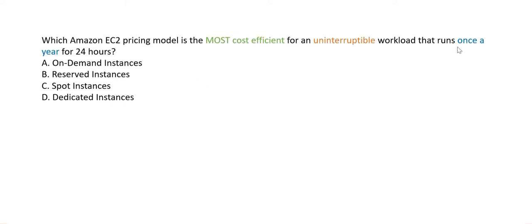However, reserved instances can be locked in for three years, making them unsuitable for a workload that runs only once a year. On-demand instances would suffice because the frequency of workload execution is too low. Spot instances cannot provide uninterruptible workloads, and dedicated instances are the most expensive option. So on-demand is the correct answer.